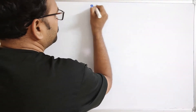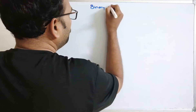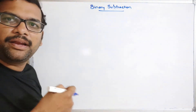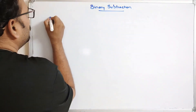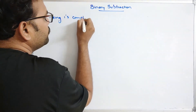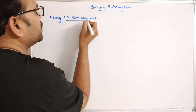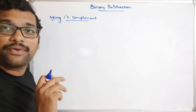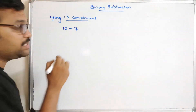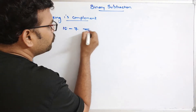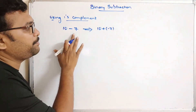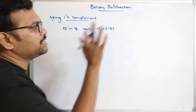Now we'll see the binary subtraction using 1's complement. First we'll use 1's complement and then we'll go with 2's complement. We need to perform the subtraction between two different binary numbers. For example, if you take 10 minus 7, this can also be done with the help of 10 plus minus 7. So we can also perform this subtraction by an addition operation: 10 plus minus 7.